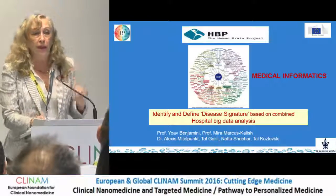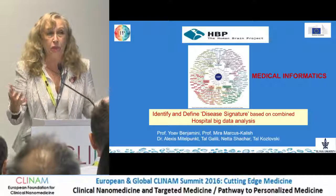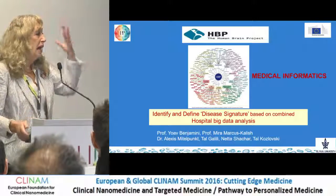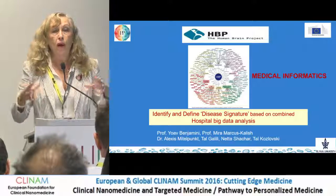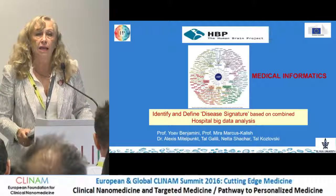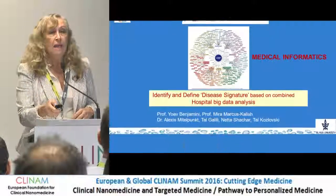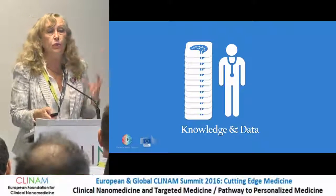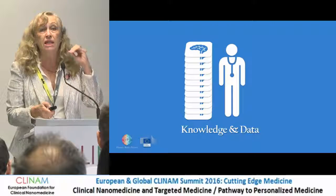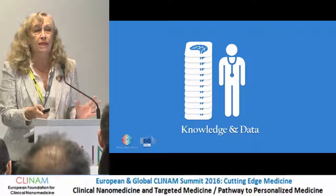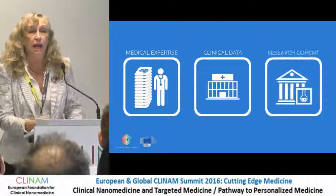I want to give you one big example from the Human Brain Project — how did we do what I'm trying to preach for, combining knowledge and data. The Human Brain Project is a very big effort, and I was responsible for the medical informatics. The idea was to really identify, as much as we can, the brain disease signatures. We started with a physician, with the knowledge captured by the physician — his understanding, his decision, if I may say, the gold standard. And we combine it with the clinical hospital data.